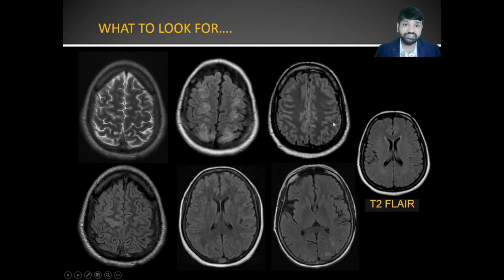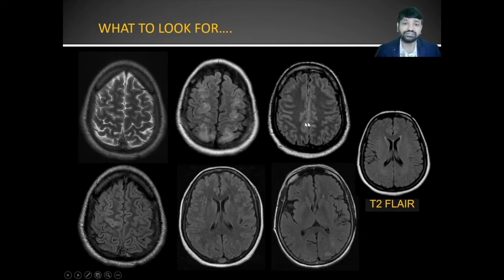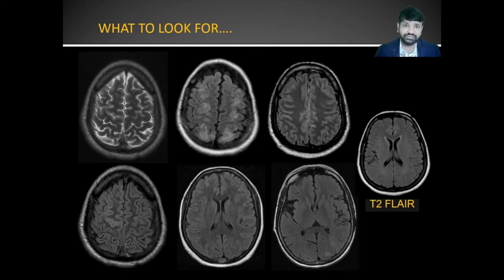Any bright signal present in the sulcal spaces should be picked up, because it can represent meningitis or slow flow in the vascular structures. The normal sulcal spaces and ventricles should not give any bright signal on the FLAIR sequence.